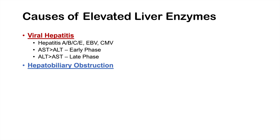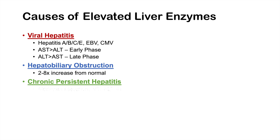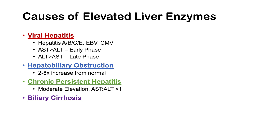Another cause of elevated liver enzymes is hepatobiliary obstruction, which can lead to about two to eight times the normal level of these enzymes. Chronic persistent hepatitis leads to a moderate elevation, and we often see an AST-to-ALT ratio less than one — meaning more ALT than AST — because of ALT's longer half-life in this chronic setting. Biliary cirrhosis normally shows AST and ALT being roughly equal, about four times higher than normal.